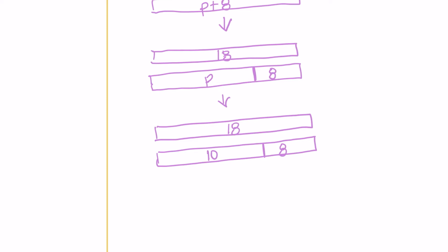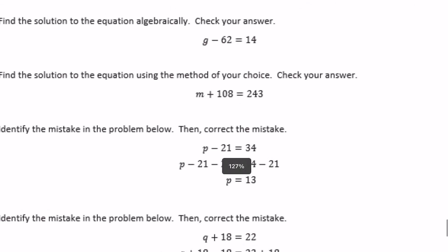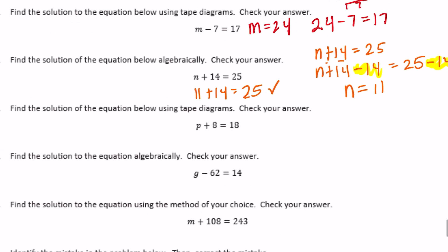So the point is to show that P right here is equal to 10 because they are the same exact size. So P is equal to 10, and if we want to do the check: P is equal to 10 because 10 plus 8 equals 18.